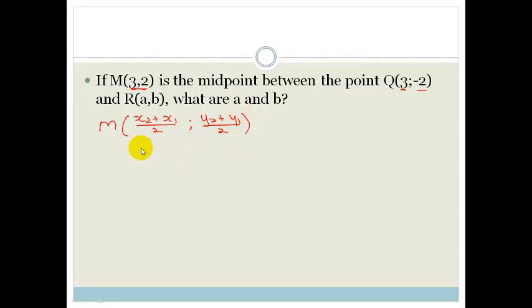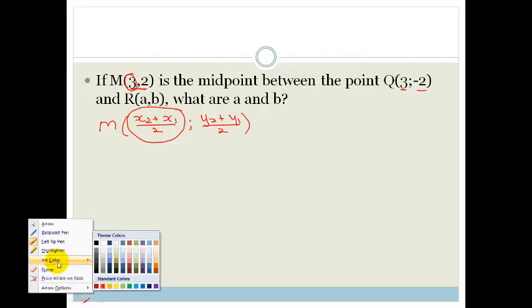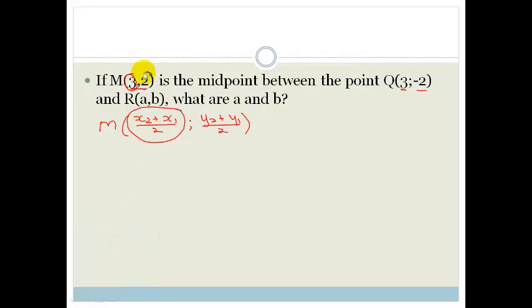is given by x2 plus x1 over 2, and then it's given by y2 plus y1 over 2. Right, so we know that this 3 is equal to this. And let's just change colors. We know that this 2 is equal to that. So if we start with this,